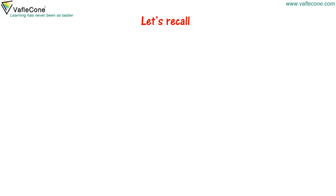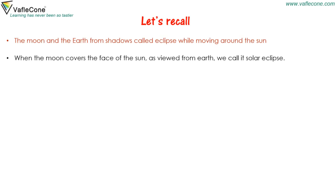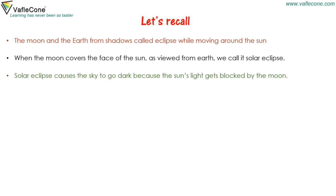Now let's recall. The moon and the earth form shadows called eclipses while moving around the sun. When the moon covers the face of the sun as viewed from the earth, we call it the solar eclipse. Solar eclipse causes the sky to go dark because the sun's light gets blocked by the moon.